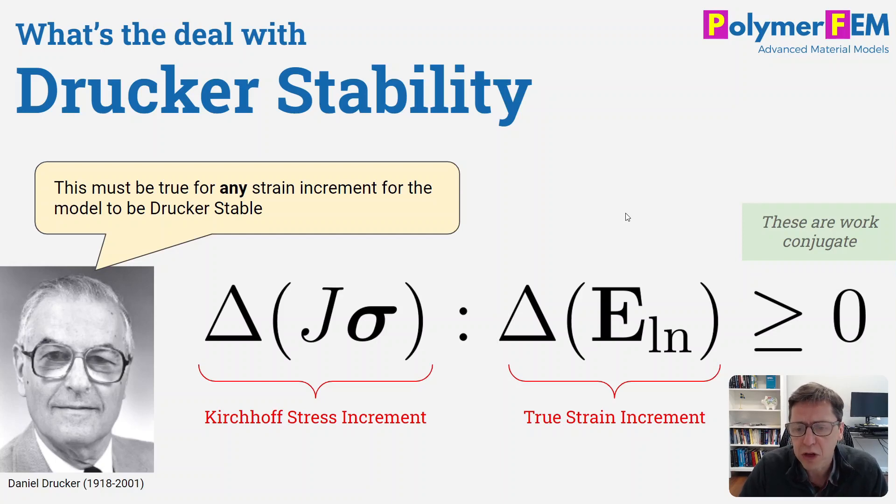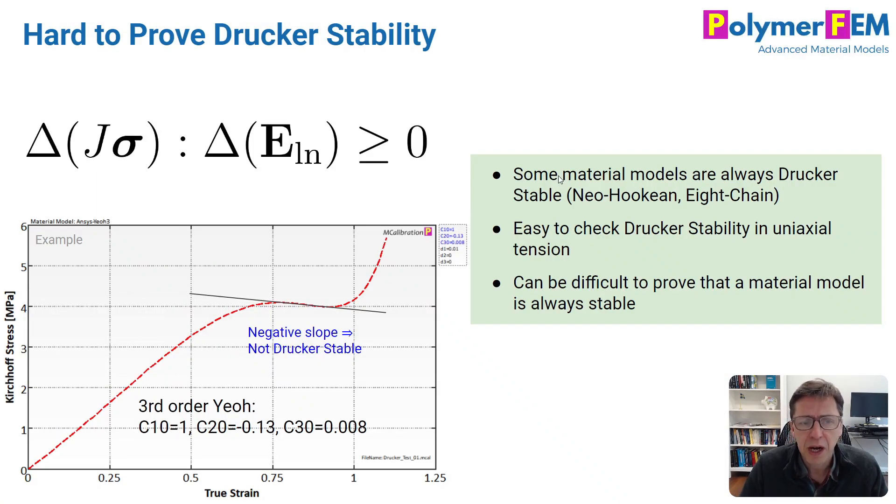And what that's all about is written in the equation shown here on this slide. And we can see that the equation looks pretty complicated. It's just a tensorial product between a stress increment and a strain increment. And they can't be just any stress and strain increments. They have to go together. And it turns out there are different ways to write this equation. This is the way that I prefer in my own work. So how do we really interpret this? What is this all about?